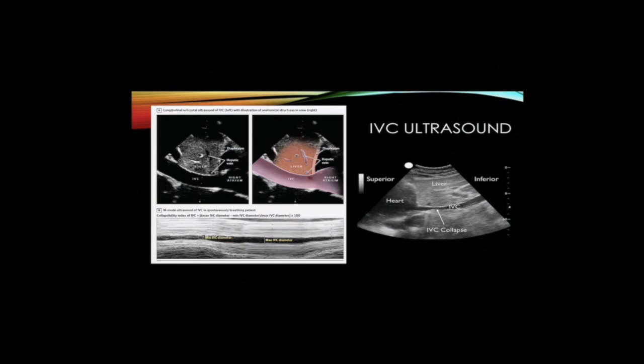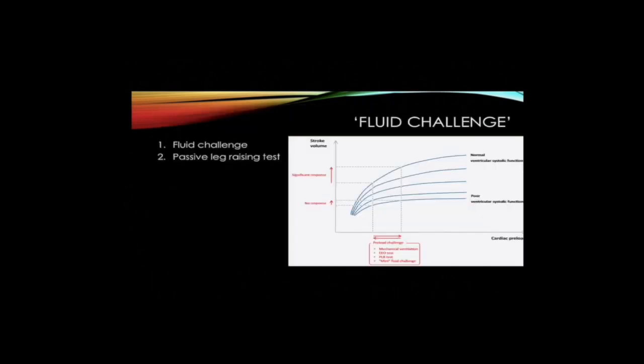The picture illustrates the anatomical structures on a subcostal view as well as the M-mode ultrasound of the IVC. In a spontaneously breathing patient, volume status should be assessed against the Frank-Starling curve. A preload challenge is administered with a view to increase the stroke volume or cardiac output, usually measured on a cardiac output monitor. This can take the form of an actual fluid bolus or a passive leg raising test.